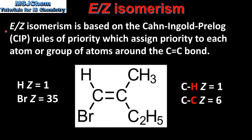EZ isomerism is based on the Cahn-Ingold-Prelog rules of priority, which assign priority to each atom or group of atoms around the carbon-to-carbon double bond. Priority is assigned based on the atomic number of the atoms bonded to the carbon atoms of the double bond. The higher the atomic number, the higher the priority.